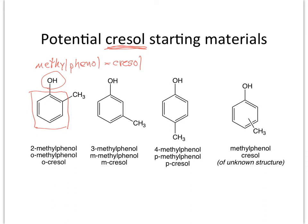There are three different potential arrangements of methylphenols. There's 2-methylphenol, which in common language we call ortho — that would be the ortho-cresol. If we have 3-methylphenol, that's called meta, the M-cresol. And 4-methylphenol, the symmetrical one, is called para-cresol.